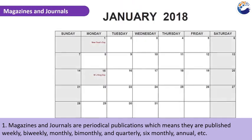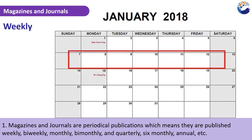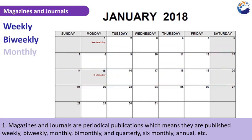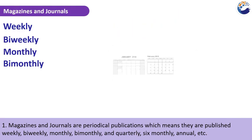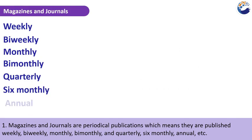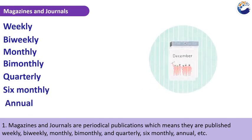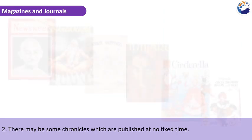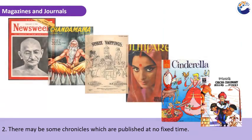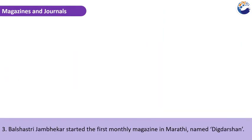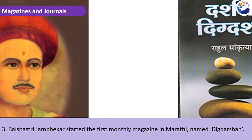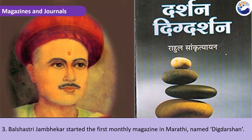Magazines and Journals are periodical publications, which means they are published weekly, bi-weekly, monthly, bi-monthly, quarterly, six-monthly, annually, etc. There may also be chronicles published at no fixed time. Bal Shastri Jambhekar started the first monthly magazine in Marathi, named Dikdarshan.